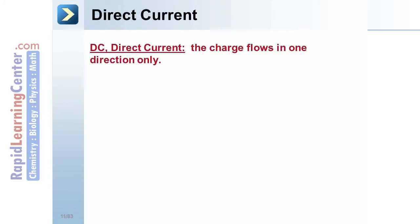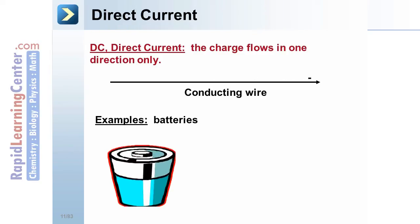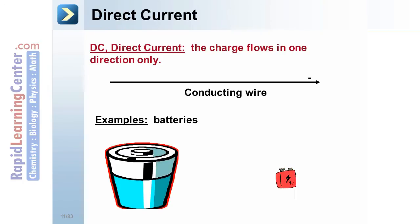Direct current, or DC. Here, the charge flows in one direction only, as the name implies. In a wire, which is connected or carrying DC current, the electrons move in one single direction. Examples are batteries. Batteries of all types provide DC or direct current.